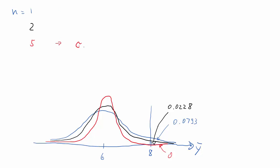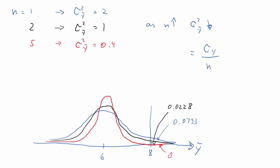That probability shrunk with the sample size. The larger the sample size, the smaller the variance of ȳ, and therefore the more concentrated the distribution of ȳ around the mean of 6. The larger n, the smaller the variance of ȳ, because the formula is σ²_Y divided by n — σ²_Y was always unchanged, it was just n, the sample size, that changed in these calculations.